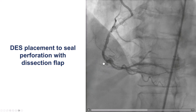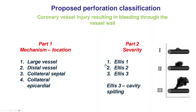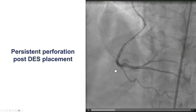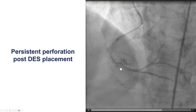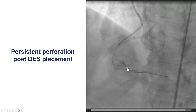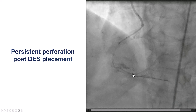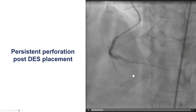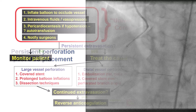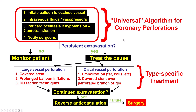We did place a drug-eluting stent. This appeared to be more of an Ellis type 2 perforation potentially, but we continued to have staining of the wall of the vessel, with the staining further out on the wall. We did an echocardiogram that did not show a pericardial effusion, but we were still concerned about the perforation — this being a large vessel perforation.